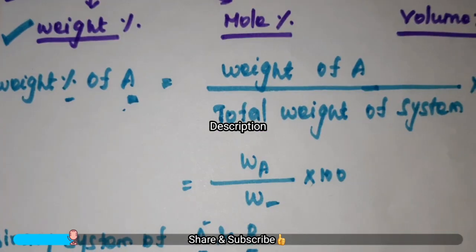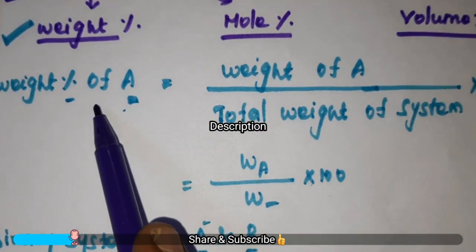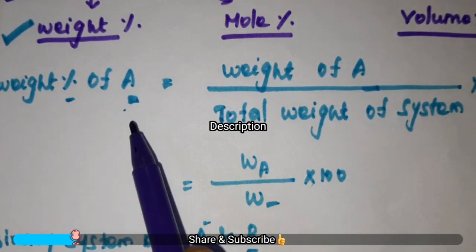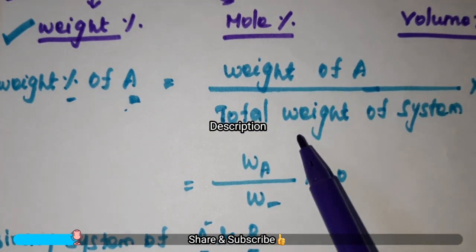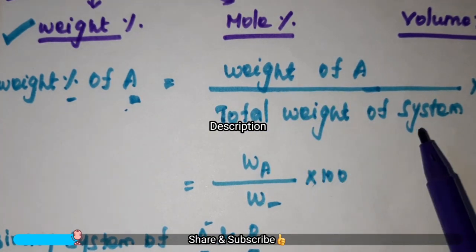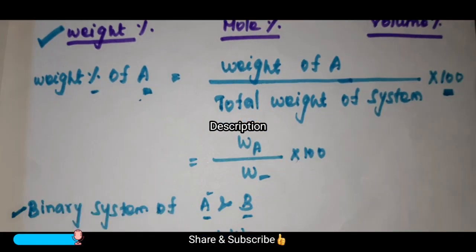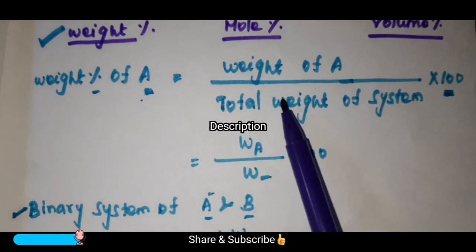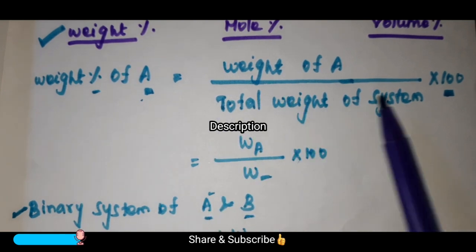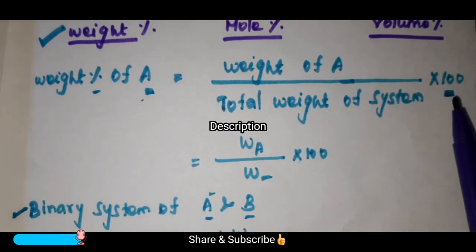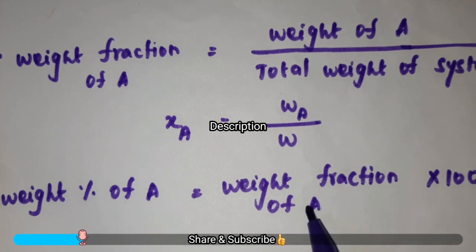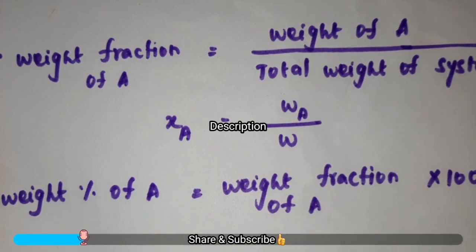Next, you can relate weight percentage of A with the weight fraction. Weight fraction is nothing but weight of A divided by total weight of system. So, weight percentage of A is equal to weight fraction of A into 100.